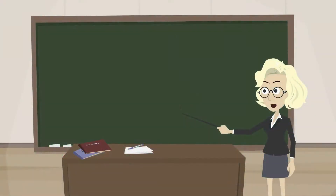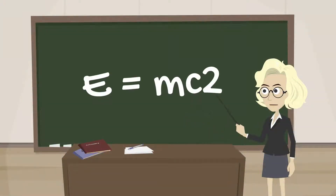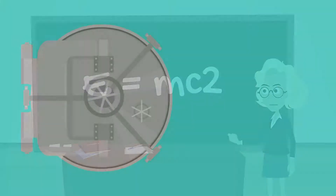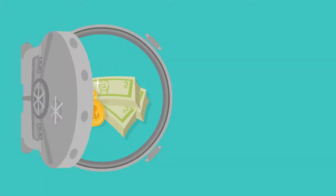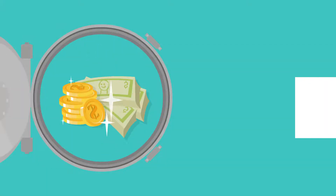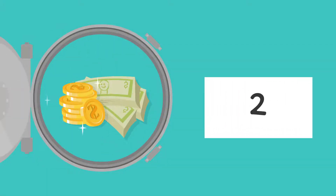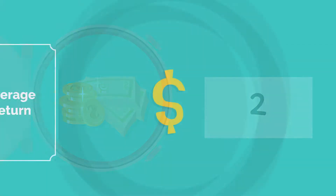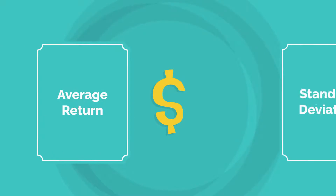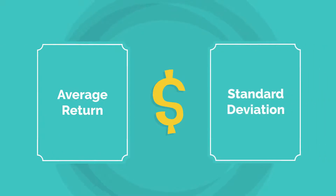Science is based largely on math — remember E equals MC squared? When it comes to your investments, there are two numbers you should know by heart: average return and standard deviation.